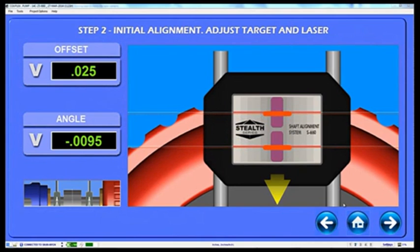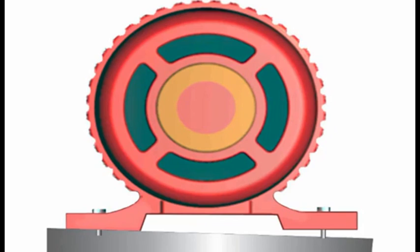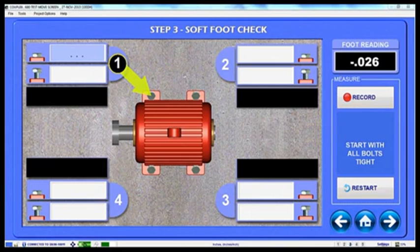One of the most important aspects of good alignment is making sure the motor's feet are parallel to its base, commonly called soft foot. Checking for soft foot can save you hours and hours of work.